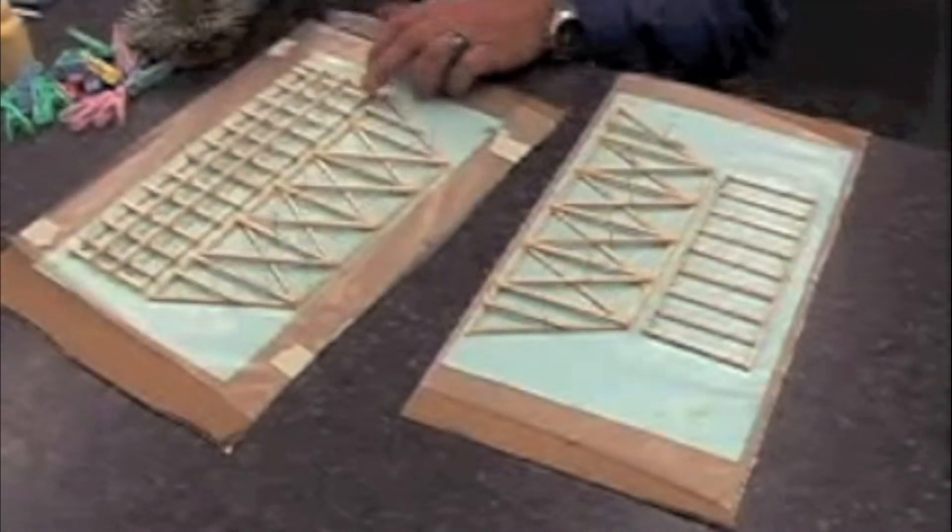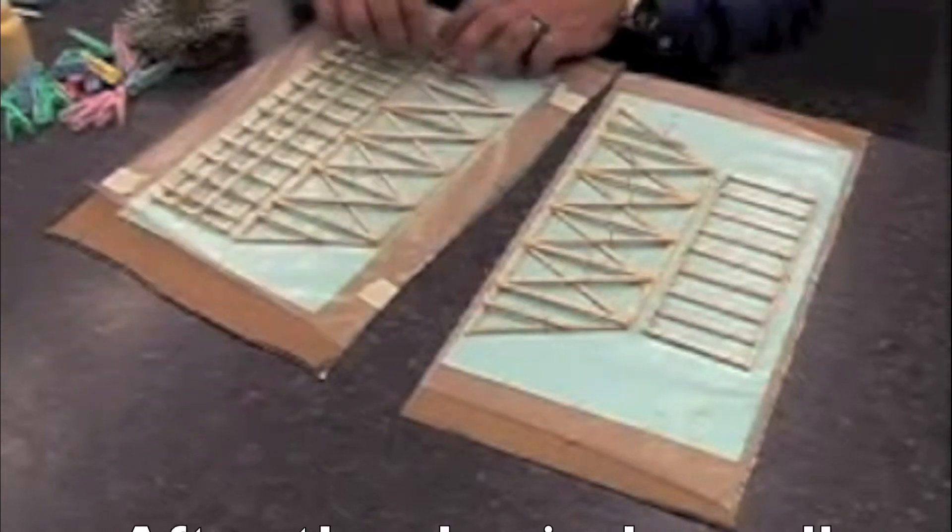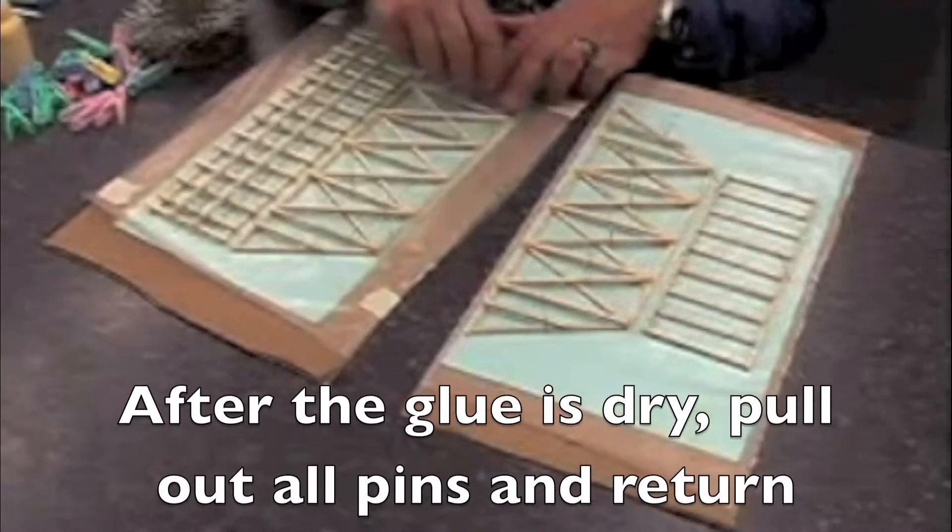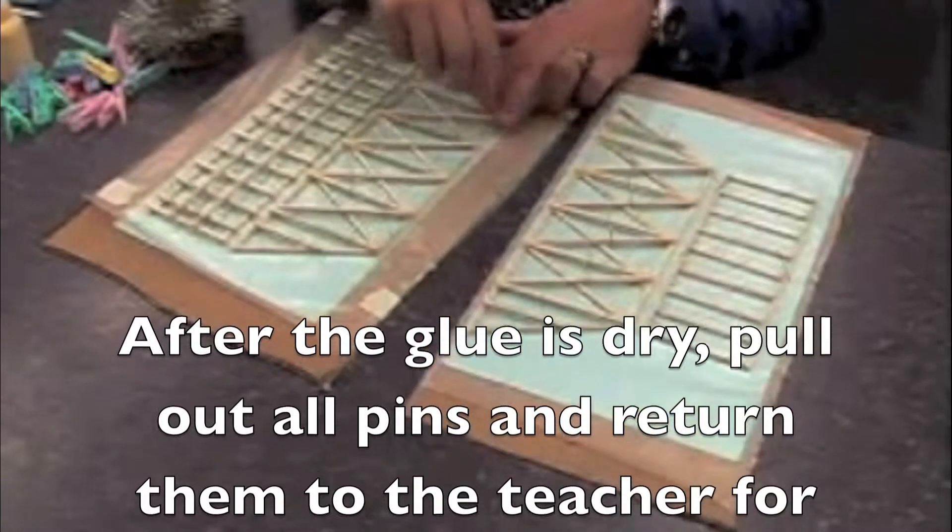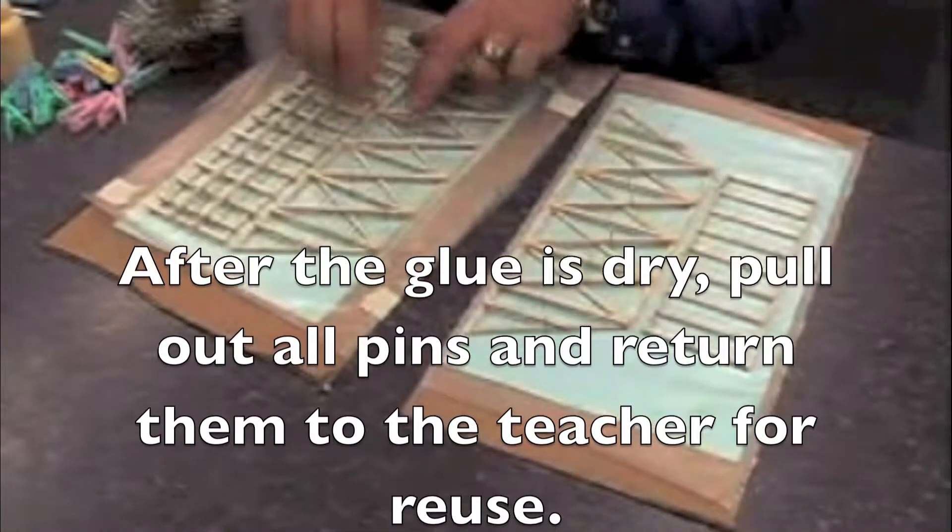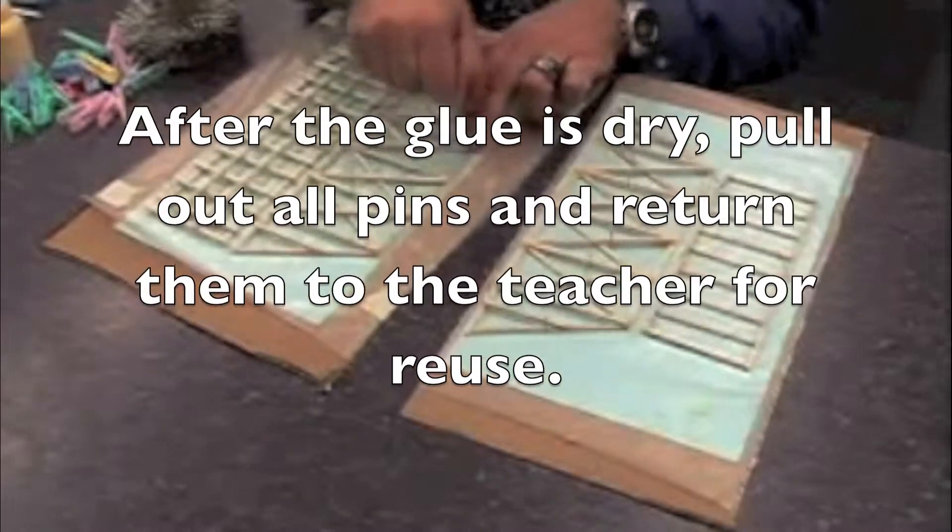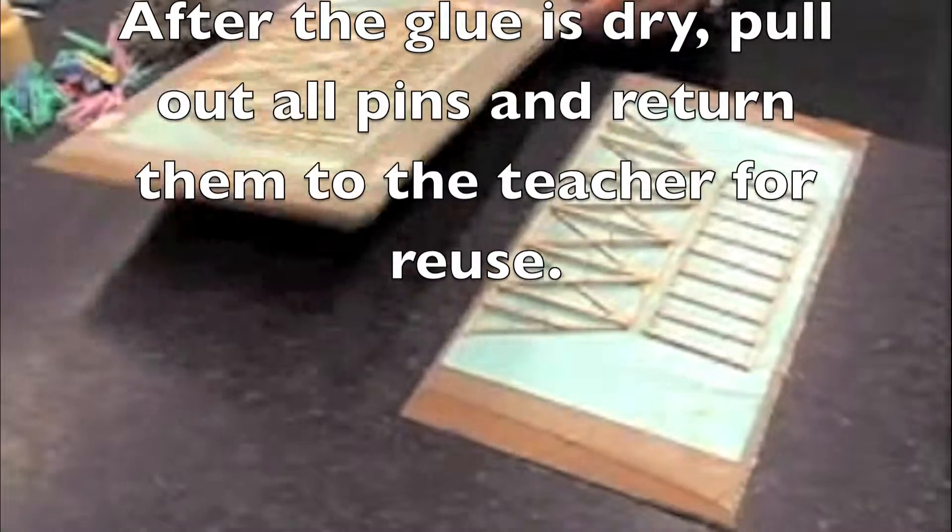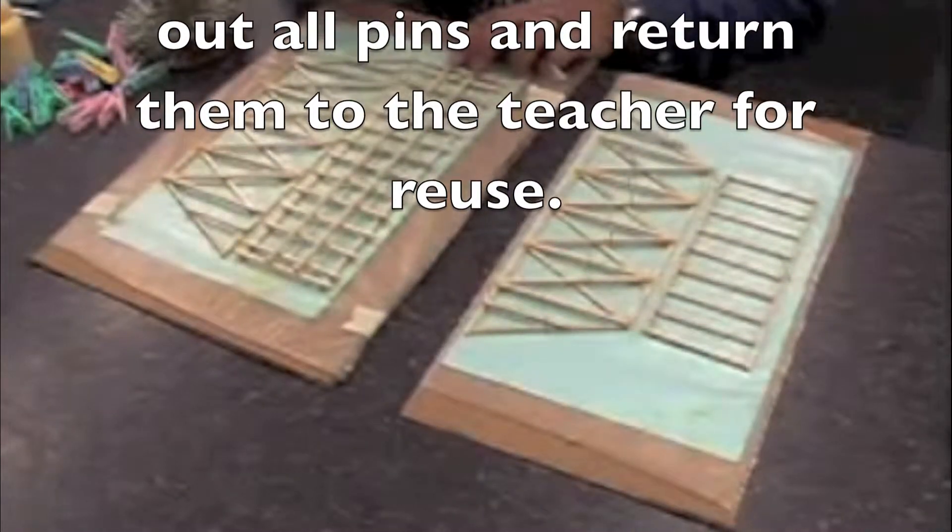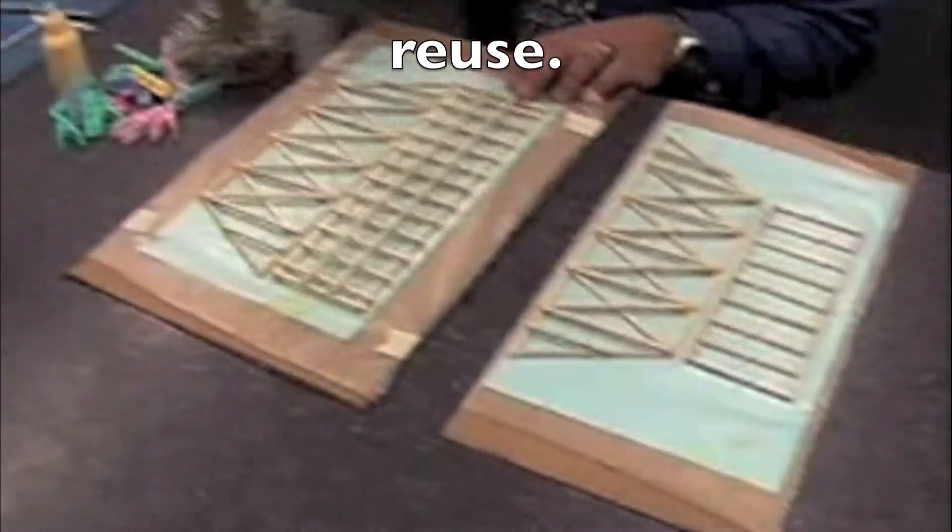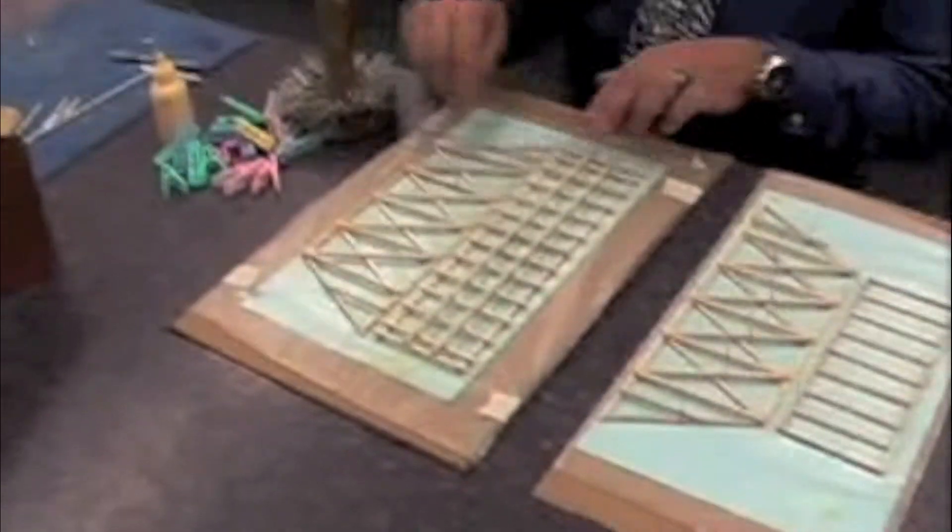If you didn't get glue all over the place, your pins should be fairly easy to pull out. If you were sloppy and you got glue all over the place, your pins may be glued in place as well and you'll have to use a pair of pliers or something to get those pins out. But these are all coming out quite nicely for me and you notice I'm taking all these pins and I'm putting them back onto the pin caddy so that other kids can use them.